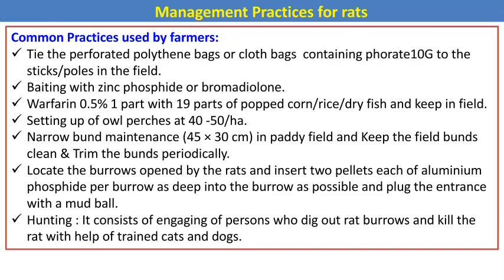For management practices, common practices used by farmers include: tying perforated polyethylene bags or cloth bags containing zinc phosphide (48–10g) to sticks or poles in the field; baiting with zinc phosphide or bromadiolone (rodenticides); warfarin 0.5% mixed one part with 19 parts popcorn or rice dry and kept in fields; setting up owl perches at 40 to 50 per hectare; maintaining narrow bunds in paddy fields and keeping fields clean with periodically trimmed bunds; and locating rat burrows and inserting two pellets of aluminum phosphide per burrow, plugging the entrance with a mud ball.